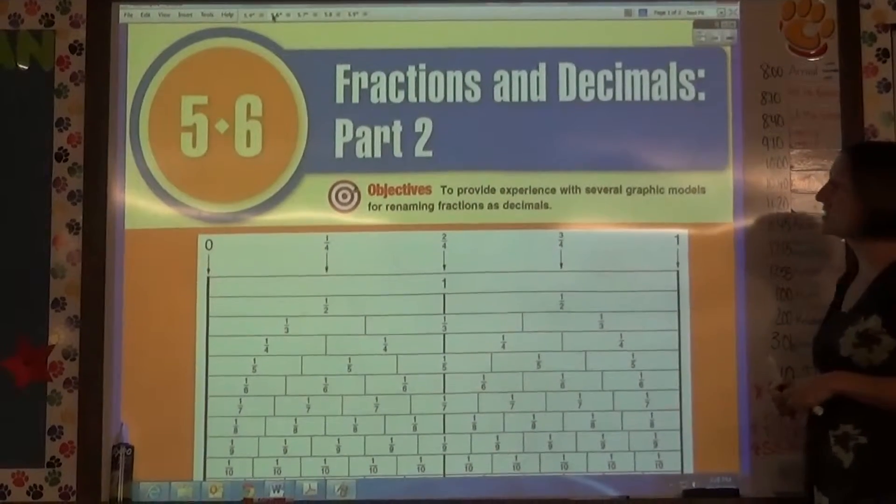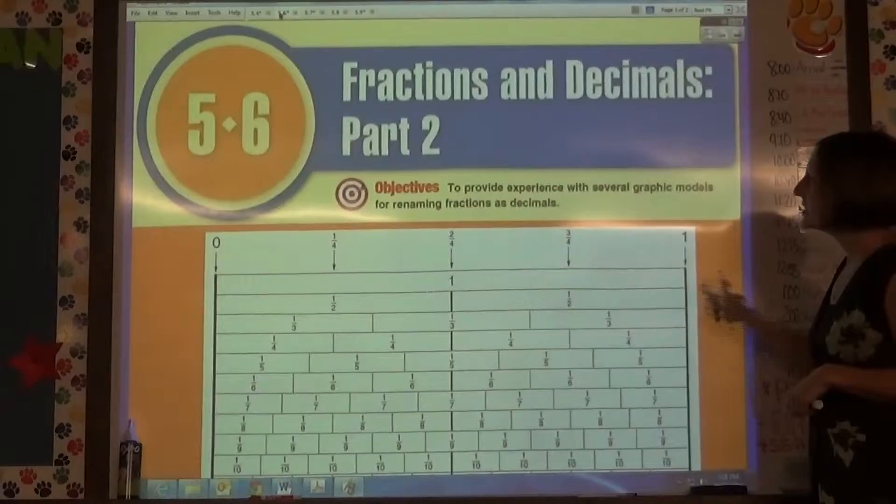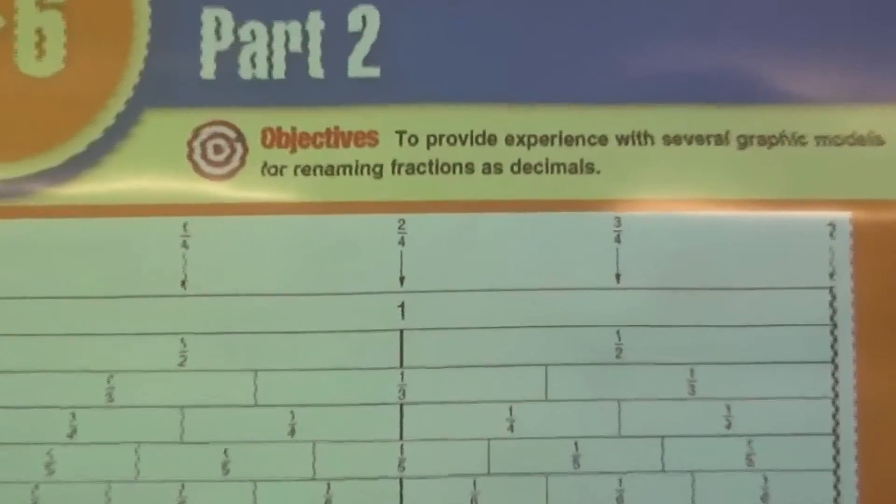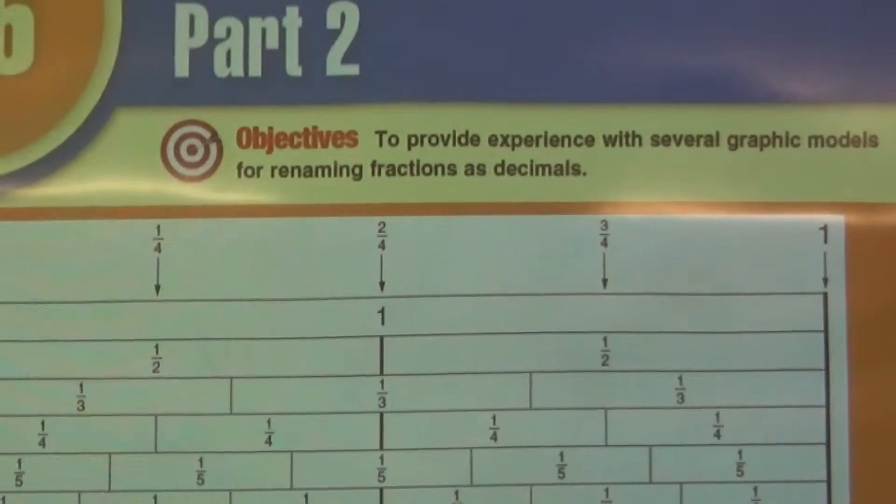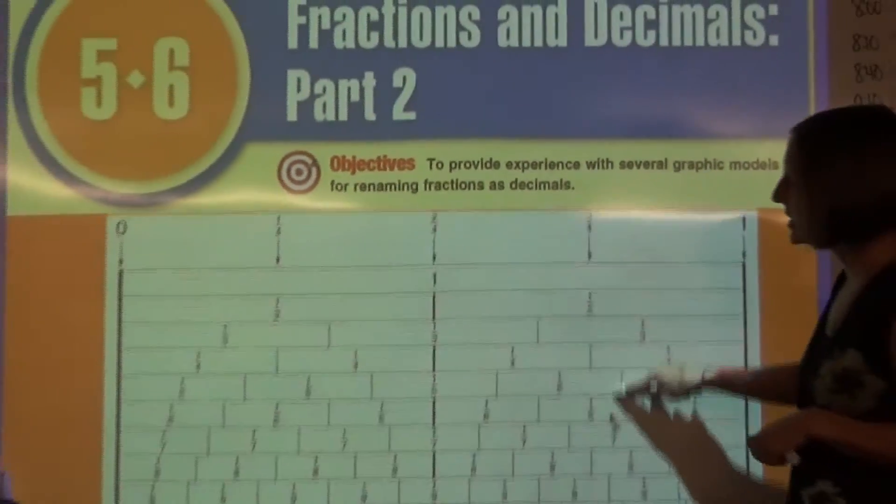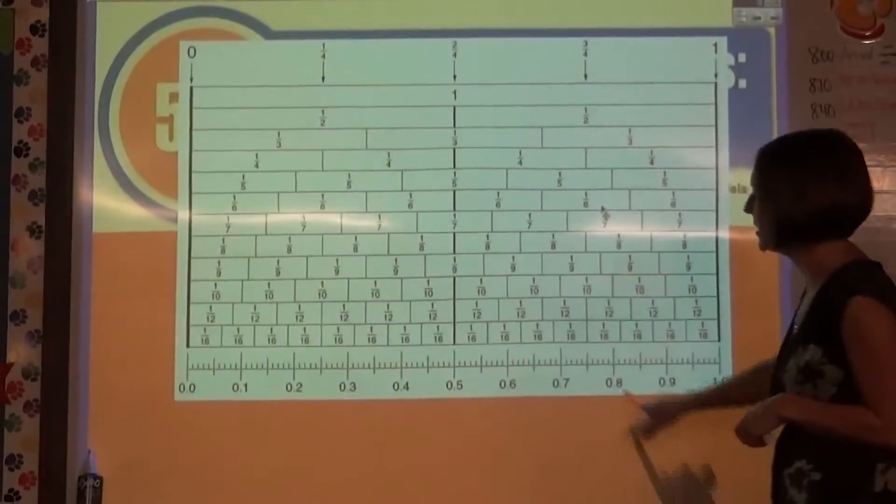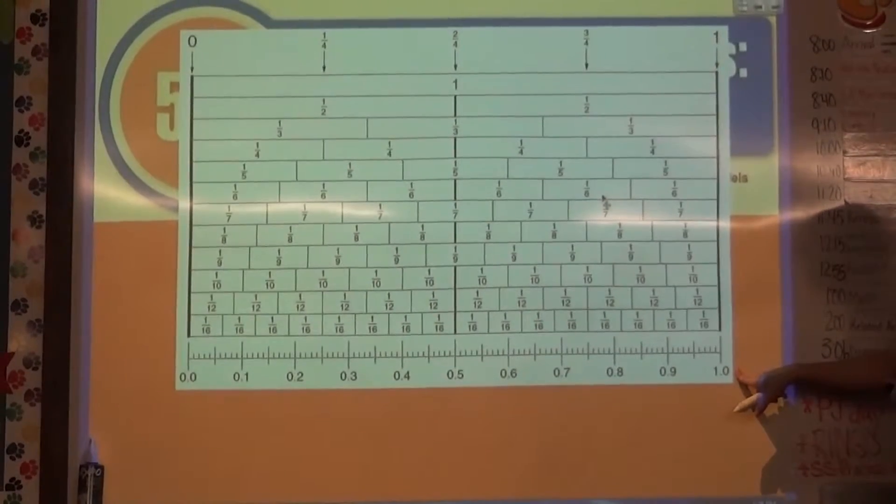Lesson 5-6 is Fractions and Decimals Part 2. In this lesson our objective is to provide experiences with several graphic models for renaming fractions as decimals. We'll start by taking a look at our fraction stick. You can see there's also a number line at the bottom this time.